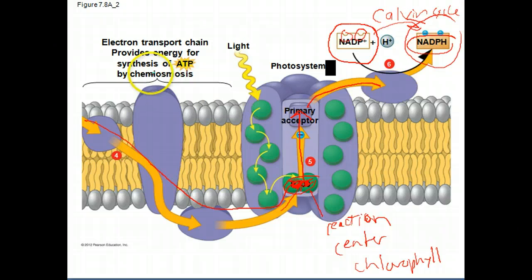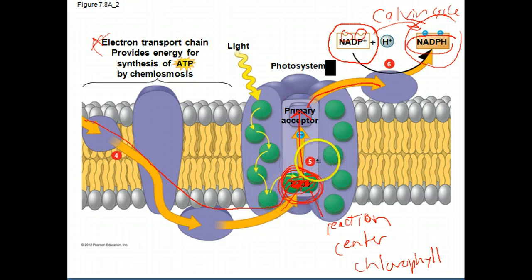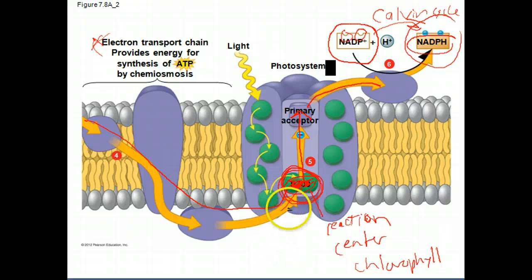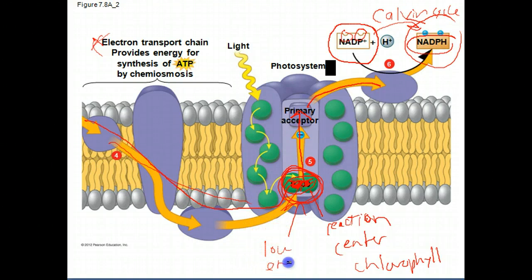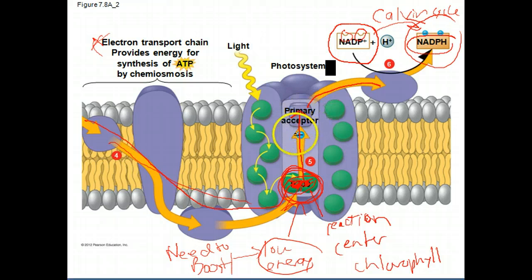We need to speak a little bit about the details of this electron transport chain. If you recall from before, the electrons, once they get here and are found in the reaction center chlorophyll, they are low energy. The energy has been extracted by the electron transport chain to pump hydrogen ions, which we'll talk about in a minute. So the electrons are low energy. We need to boost them. Boost slash recharge.